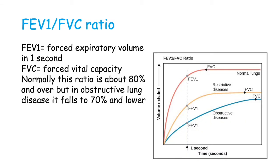Another important concept is the FEV1 to FVC ratio. FEV1 is the forced expiratory volume in one second — the total amount of air you can expire from your lungs in one second. The forced vital capacity, FVC, is the total amount of air you can inspire and expire from your lungs. Normally this ratio is around 80% and above, but in obstructive lung disease it falls to around 70% and lower, because we cannot expire air as easily due to obstruction.